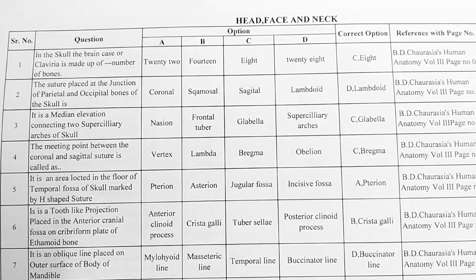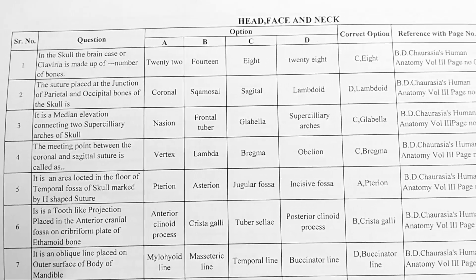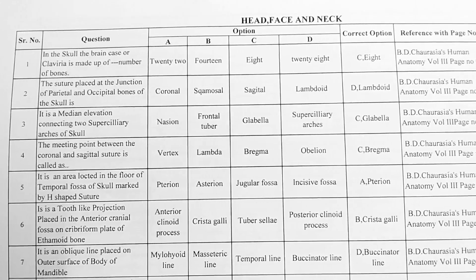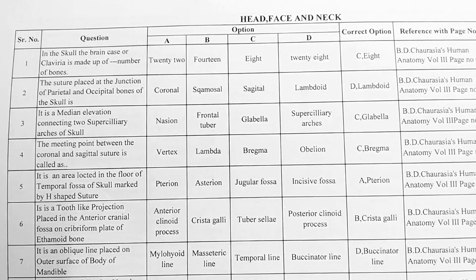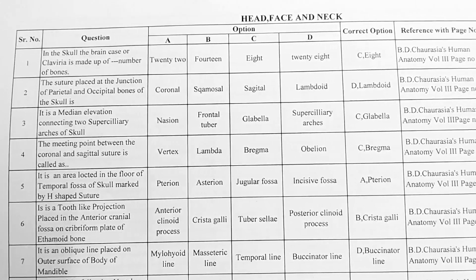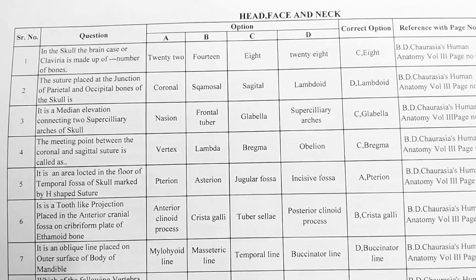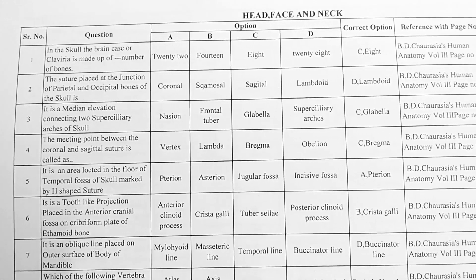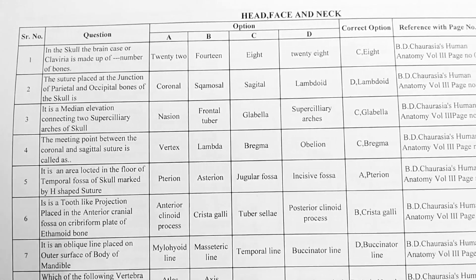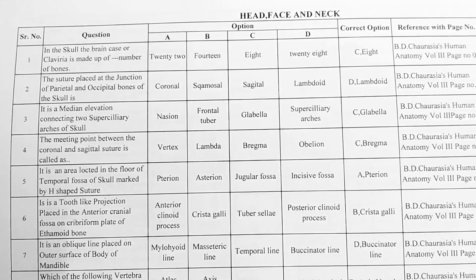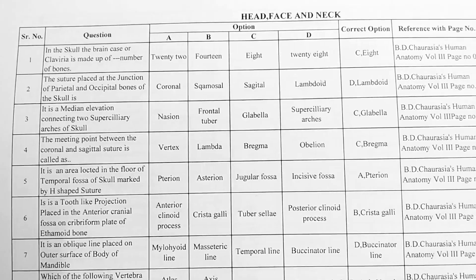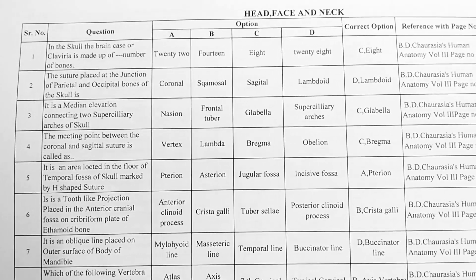Next question. It is a median elevation connecting two superciliary arches of the skull. Options — A: nasal, B: frontal tuber, C: glabella, D: superciliary arches. Correct option is C, glabella.